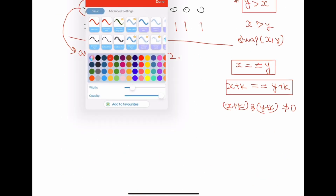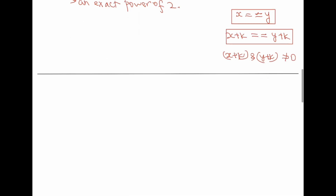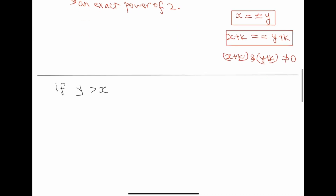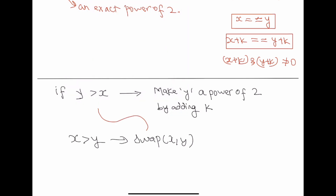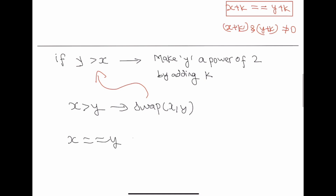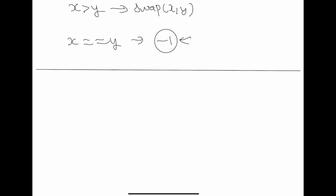So if x and y are equal, we can safely say that no k exists to satisfy the property. In conclusion: if y is bigger than x, make y a power of 2 by adding k. If x is bigger than y, swap x and y and do the same. If x and y are equal, output minus 1. The question is: how will you make y a power of 2?